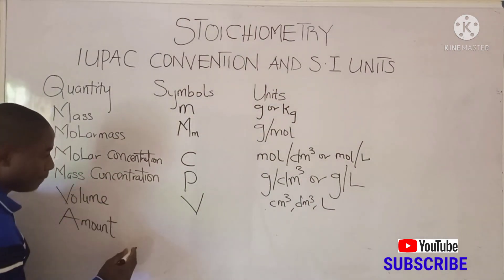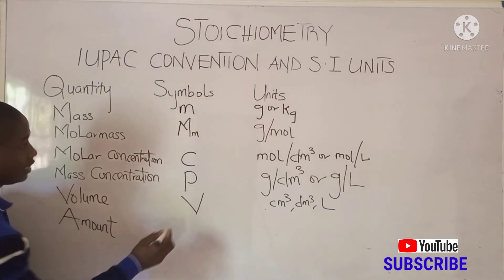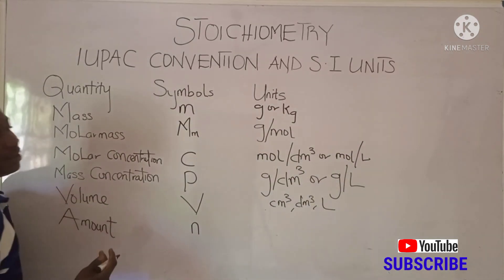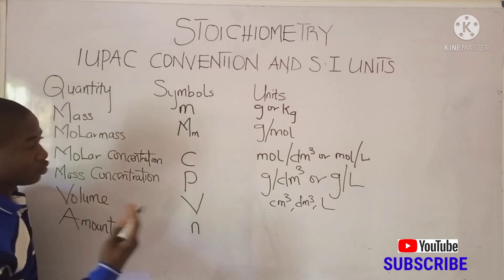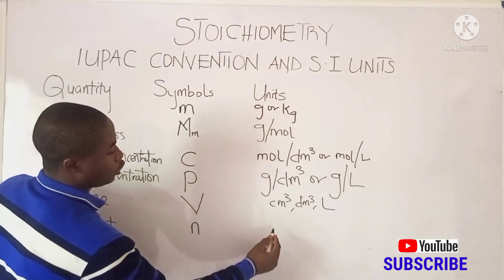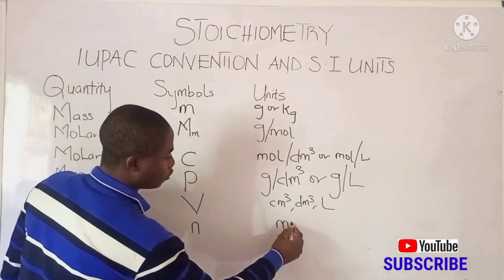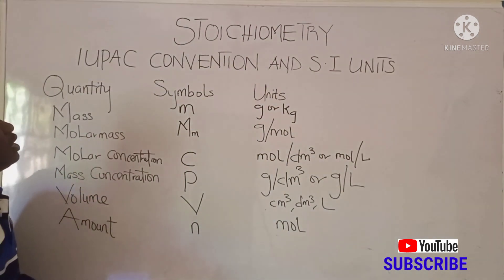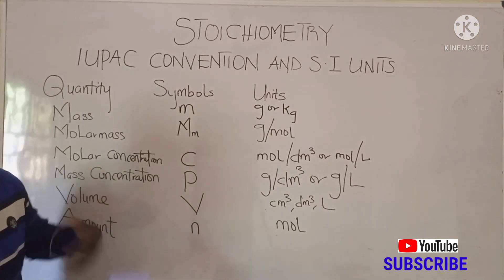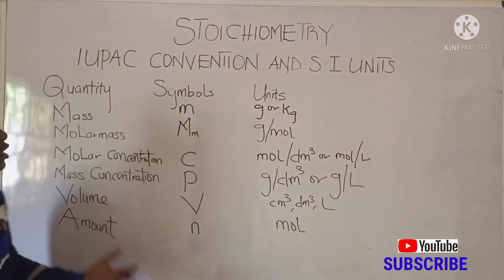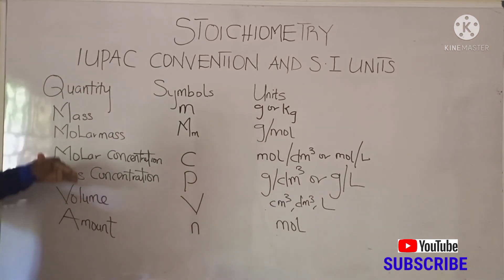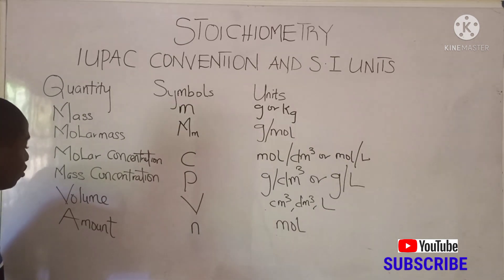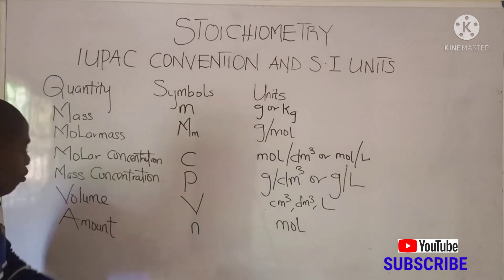For amount of substance, the symbol is n, which signifies the number of moles, and the unit is moles. So these are the basic quantities and symbols — mass, molar mass, molar concentration, mass concentration, volume, and amount — that will enable us to understand stoichiometry better.